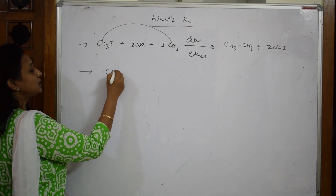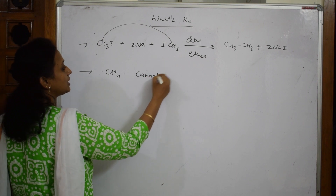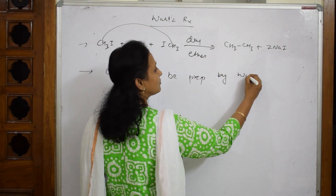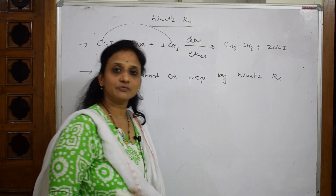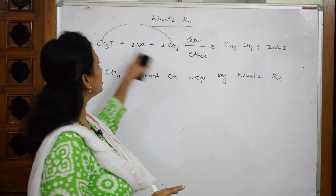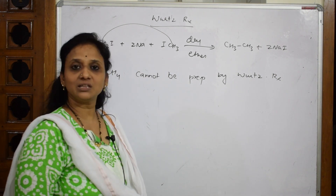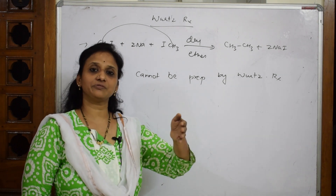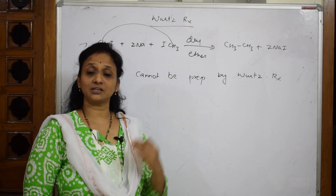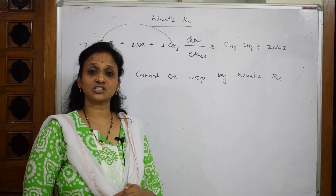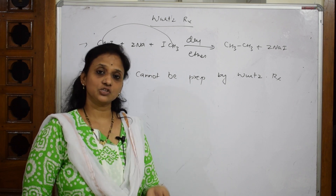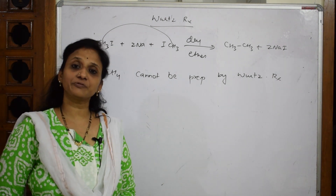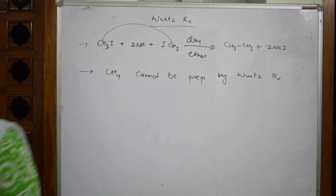Another important point: methane cannot be prepared by the Wurtz reaction, because the Wurtz reaction requires two molecules of alkyl halide — and there is no alkyl halide simpler than CH₃X that would give methane. So to summarize: we covered the definition, general formula, the reaction, the role of sodium metal, the role of dry ether, and what is not preferred in the Wurtz reaction.